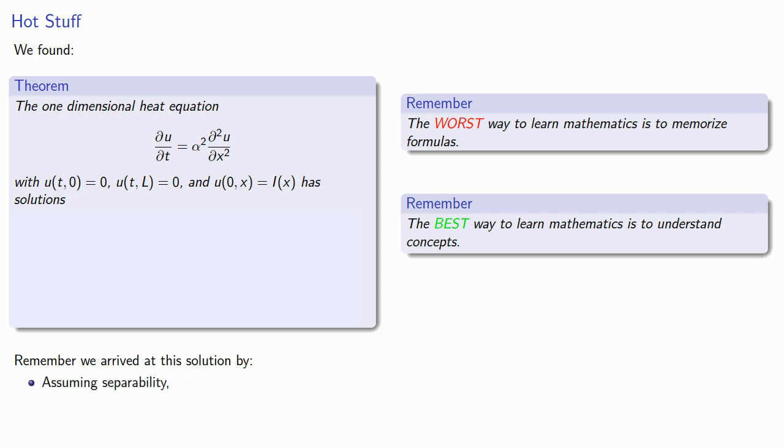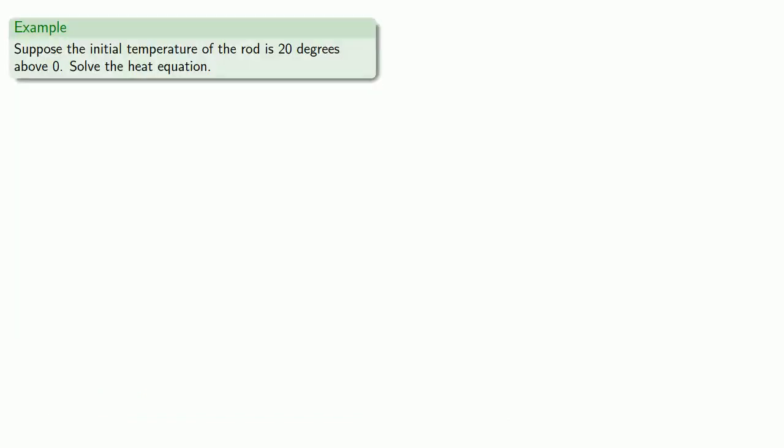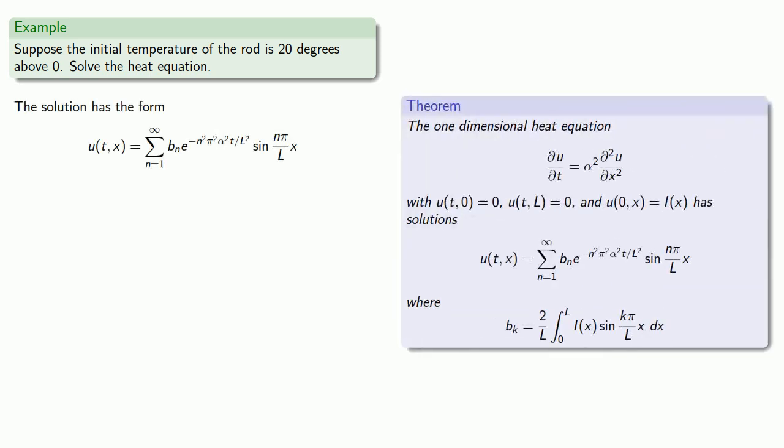First, we assume separability, and then we use the initial conditions to determine restrictions on the constants. So let's see how that plays out. We won't go over every single step in the solution. Let's start about midway through where we know the form of our solution, and it remains to find the coefficients bn.